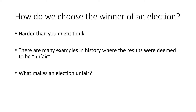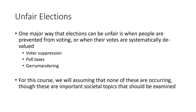You might think it's pretty simple, but it's actually harder than you might think. There are many examples in history where the results of an election were deemed to be unfair, and we're going to talk a lot about fairness and what that really means in this mathematics course. One way elections can be unfair is when people are prevented from voting — through voter suppression, poll taxes, or gerrymandering — but those are not going to be the kinds of things we talk about in this course.